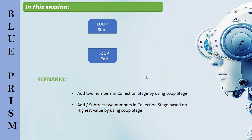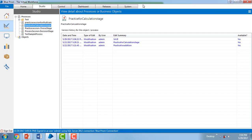We are having a scenario: call a business object, call a collection, retrieve variables from a collection action item in the business object, move to the next line of the collection, send the item in the collection, and repeat until it completes. So I want to add two numbers in the collection using Loop Stage, and also add or subtract two numbers based on the highest value using Loop Stage.